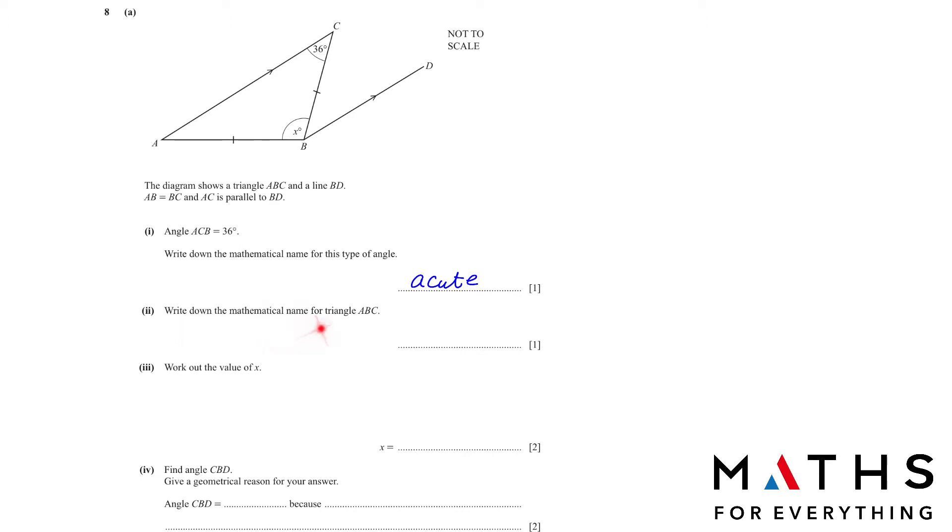Write down the mathematical name for triangle ABC. Two sides are equal to each other, therefore it is an isosceles triangle. Next, we have to find the value of x. In an isosceles triangle, the opposite sides are equal and the opposite angles are equal. When we add the three angles of a triangle, we get 180. So 36 plus 36, make x the subject. X is equal to 180 minus 72, which is 108.